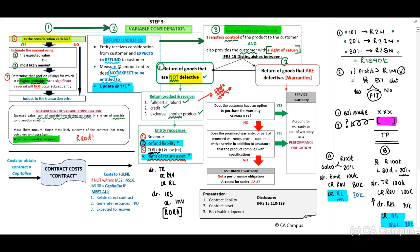The second scenario is where returned goods are defective — this normally relates to warranties. There are two questions to consider. First: does the customer have an option to purchase the warranty separately? You will need to read the information in your question. If the answer is yes, this will be a performance obligation in terms of IFRS 15 rules.